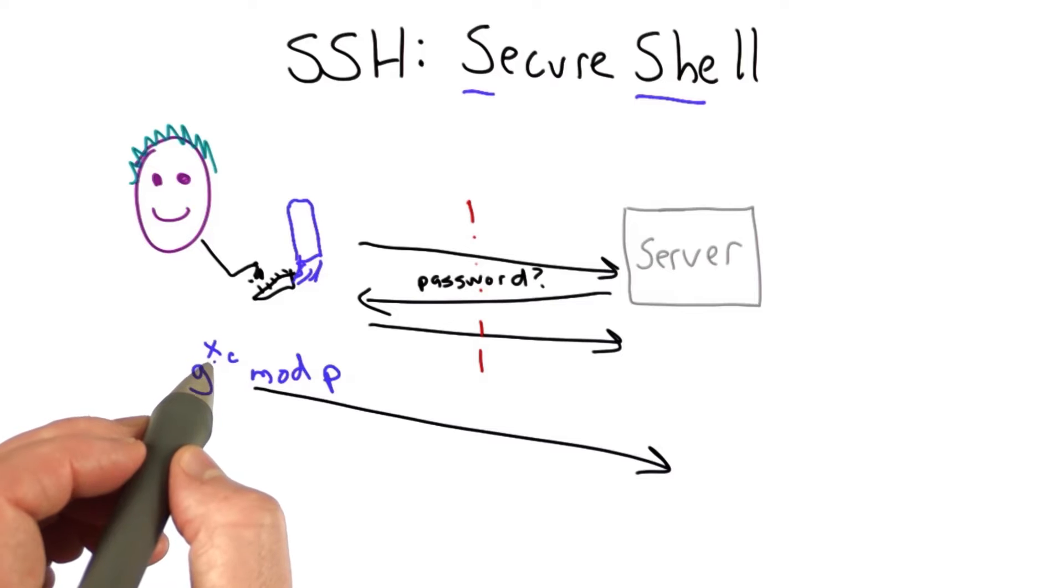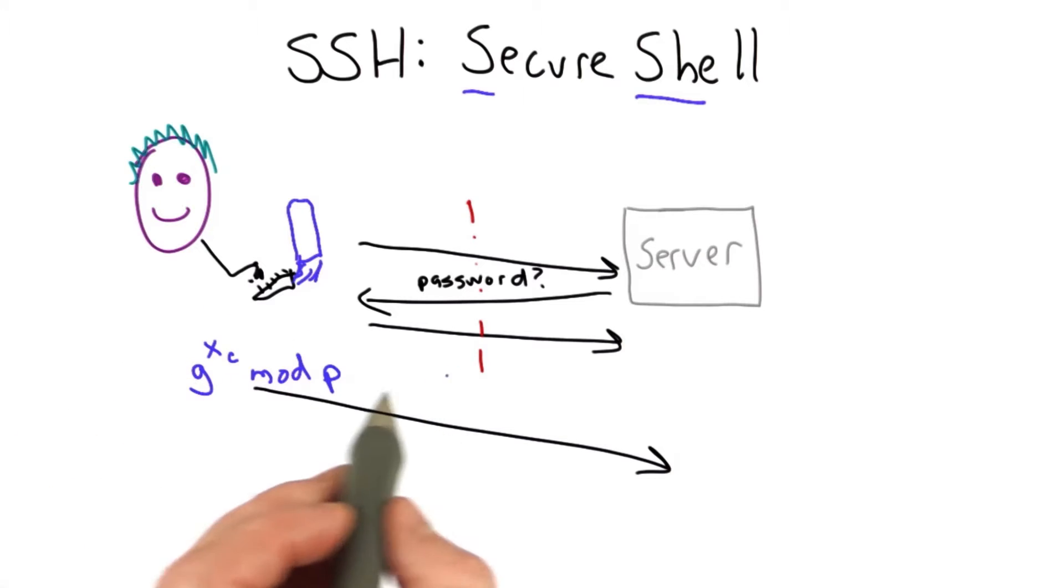The client picks a large random number and sends to the server g to that power mod p, and g is the generator, p is the modulus, just like in Diffie-Hellman.